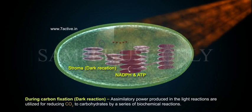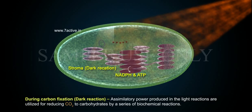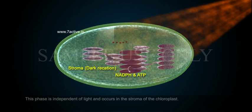During carbon fixation, also called the dark reaction, the assimilatory power produced in the light reactions is utilized for reducing CO2 to carbohydrates by a series of biochemical reactions. This phase is independent of light and occurs in the stroma of the chloroplast.